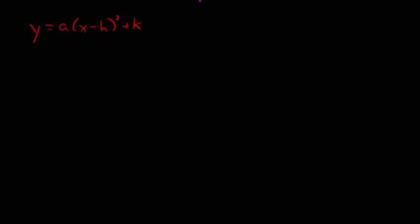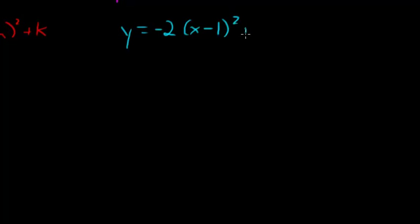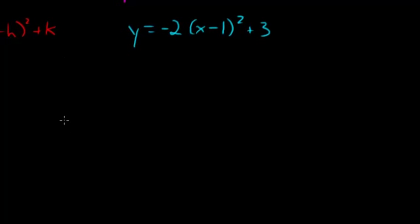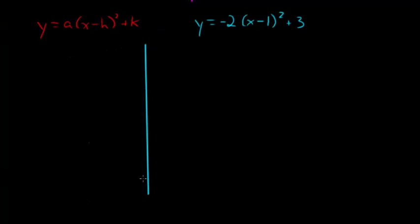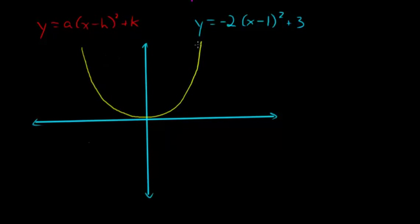So now if I give you an example, you should be able to figure out how to move it. So y equals negative 2 times x minus 1 squared plus 3. So let's draw our Cartesian plane here, our graph, and let's see whether we can figure out what to do with our y equals x squared. So here is what we're starting with. We start with y equals x squared like this.